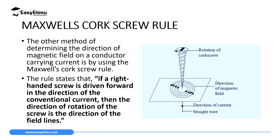So apart from Fleming's right hand grip rule, Ampere's swimming rule, and the Oersted experiment, we can also use Maxwell's Cork Screw Rule to determine the direction of the magnetic field around a conductor carrying current. This rule states that if a right-handed screw is driven forward in the direction of conventional current, then the direction of the rotation of the screw is the direction of the field lines.